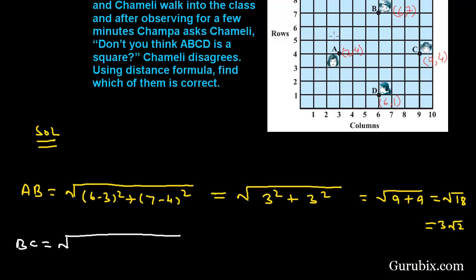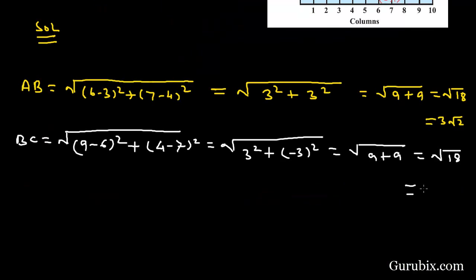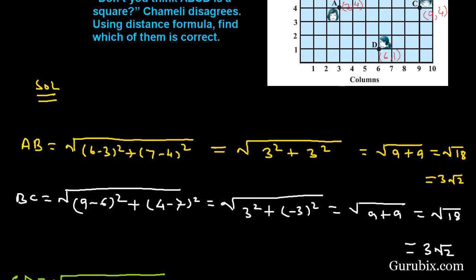Now we find the distance between points B and C: BC equals the square root of (9 − 6)² + (4 − 7)², which equals √(3² + (−3)²) = √(9 + 9) = √18 = 3√2.